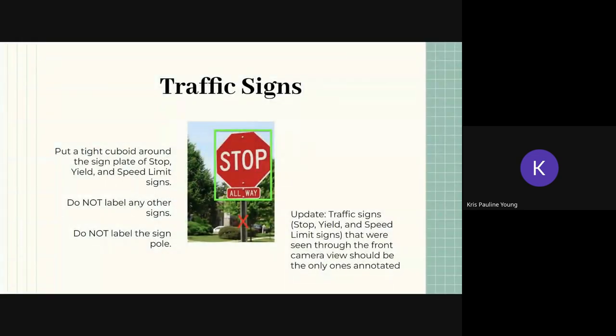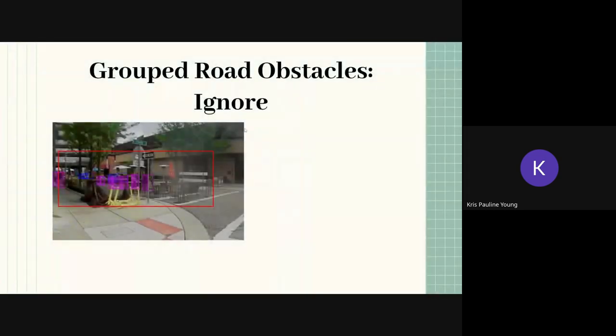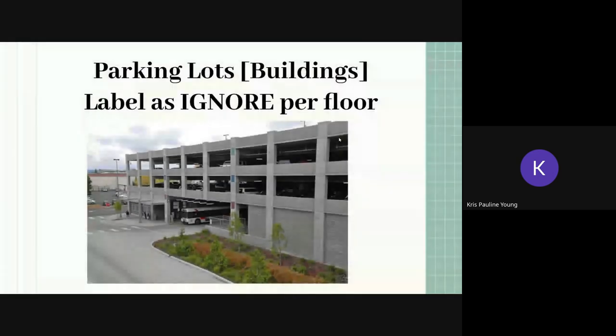Traffic sign, we went over this, don't include the pole. And then sometimes you will have grouped road obstacles. Like if you notice there's a lot of cones, like this one, like on a sidewalk for example, and if they are at least a four within a four meter range of the drivable surface, then you can use an ignore label to cover all of those cones. But this only works in certain cases.